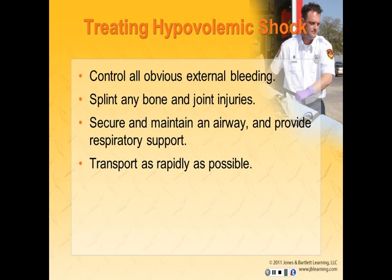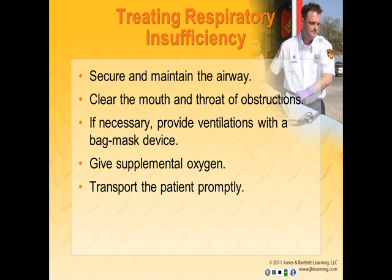For treatment of hypovolemia: control all obvious external bleeding, splint any bone and joint injuries, and secure and maintain an airway with respiratory support including supplemental oxygen and, if needed, assisted ventilations. Be sure the patient does not aspirate blood or vomitus and transport rapidly. To treat respiratory insufficiency, immediately secure and maintain the patient's airway. Clear the mouth and throat of any obstructions including mucus, vomitus, and foreign materials. If necessary, ventilate the patient with a BVM device, always provide supplemental oxygen, and transport promptly.